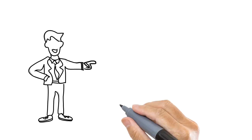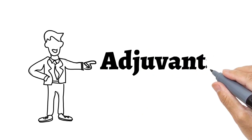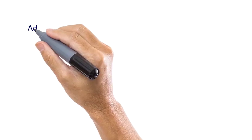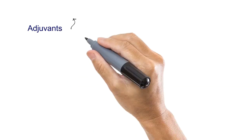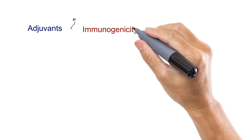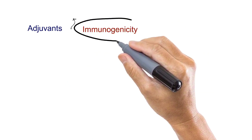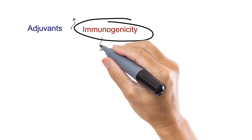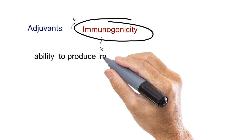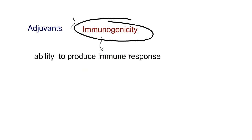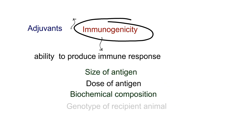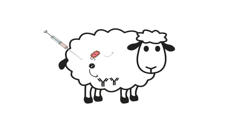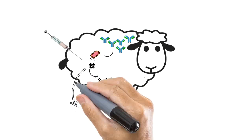In this video session, we will discuss the concept of adjuvants. Adjuvants are substances which increase the immunogenicity of the antigen. Immunogenicity of the antigen is its ability to produce an immune response when injected into an animal. It depends on many factors like size of the antigen, dose of the antigen, its biochemical composition, genotype of the recipient animal, and many other factors. Therefore, every antigen differs in immunogenicity — some antigens are more immunogenic than others.